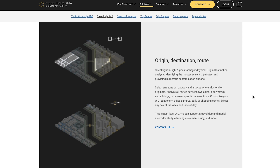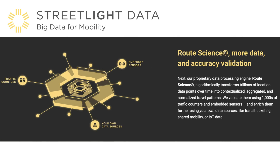They use a process called root science to turn those raw data into more contextualized, aggregated, and normalized travel patterns. They also validate these data by using thousands of traffic counters and embedded sensors to make sure that their models are truly presenting travel patterns.